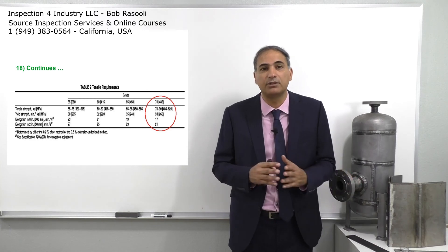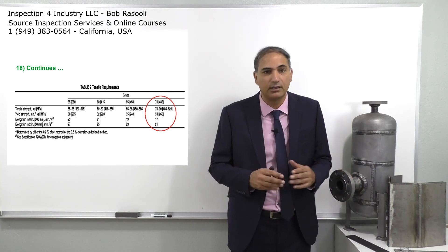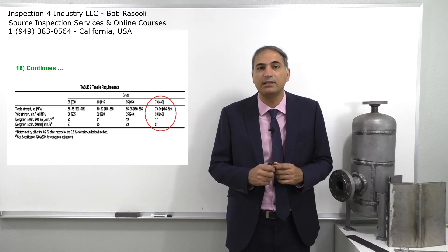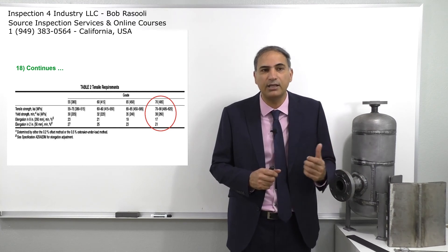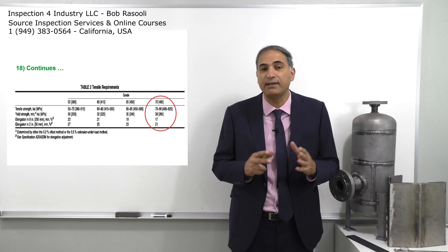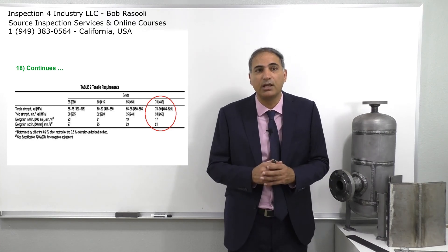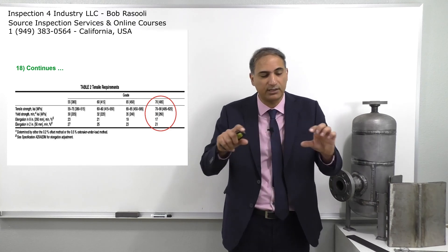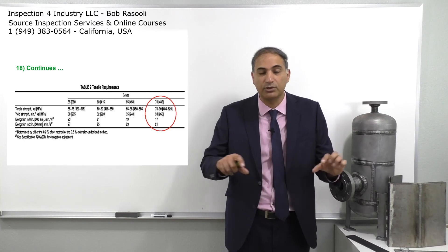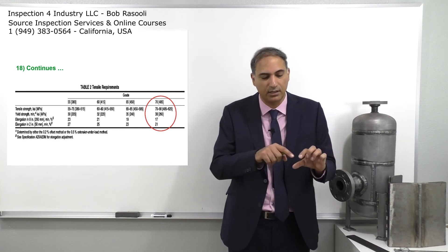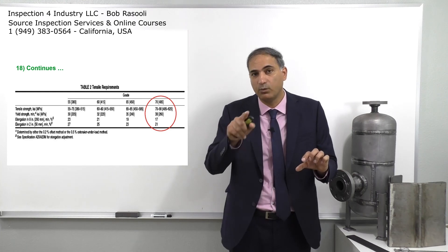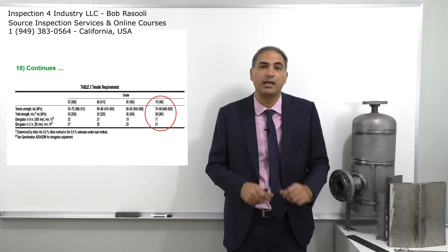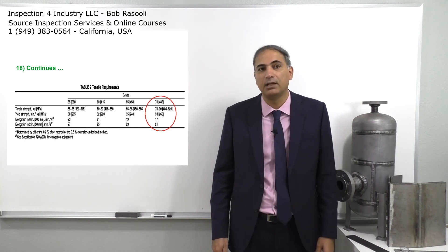Table 2 for SA-516 grade 70 shows mechanical property requirements: tensile strength should be 70,000 to 90,000 psi, yield strength should be 38,000 psi, elongation in 8 inches should be 17 percent, and elongation in 2 inches should be 21 percent. After checking chemical composition on the material test report, you check these mechanical test results against the values in Table 2 to confirm they are consistent with the requirements.